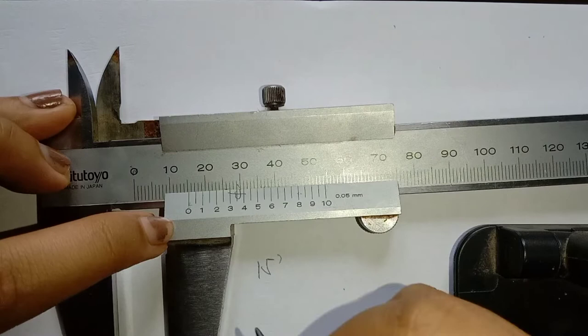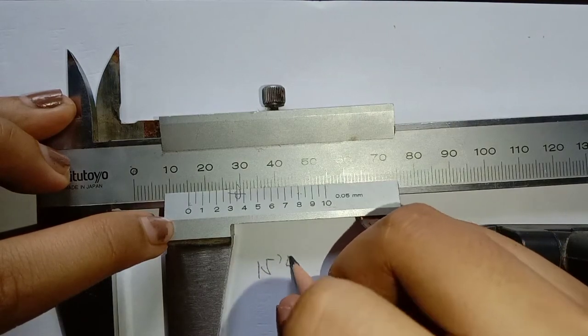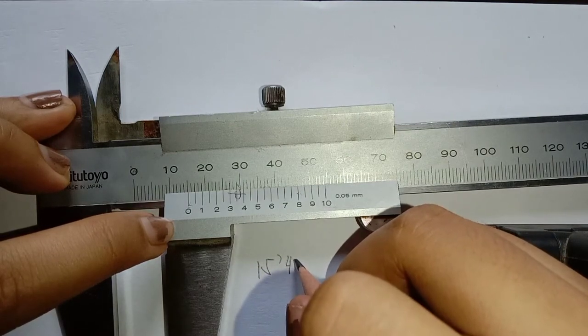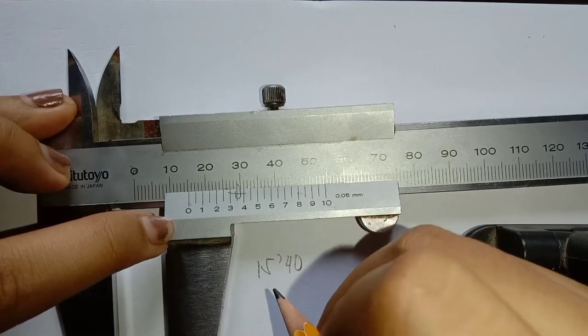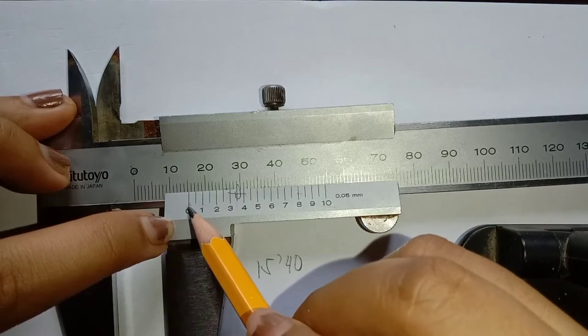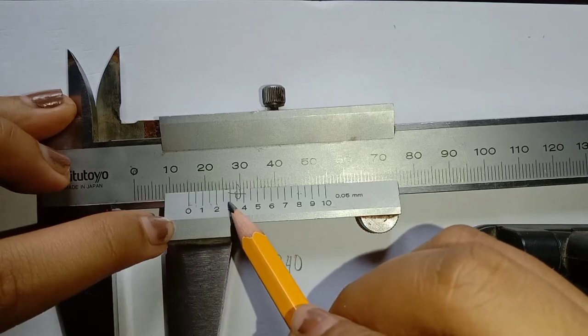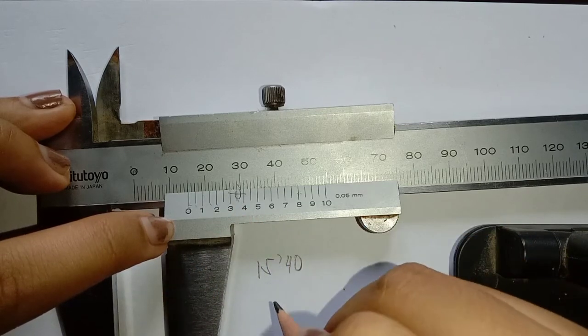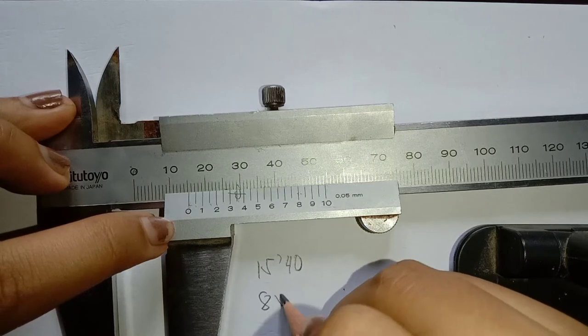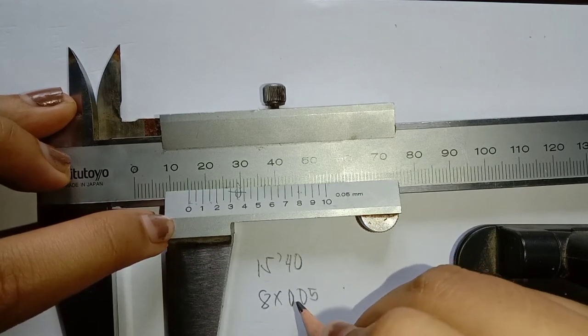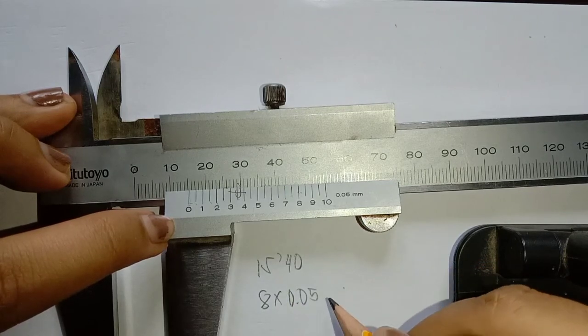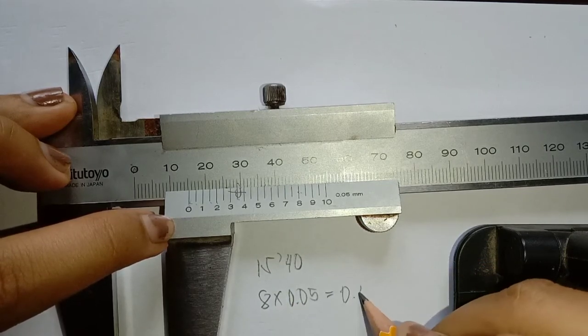So, the measurement is 0.40 mm or 15.40 mm. I have 8 lines: 1, 2, 3, 4, 5, 6, 7, 8. So, 8 times 0.05 is equal to 0.40.